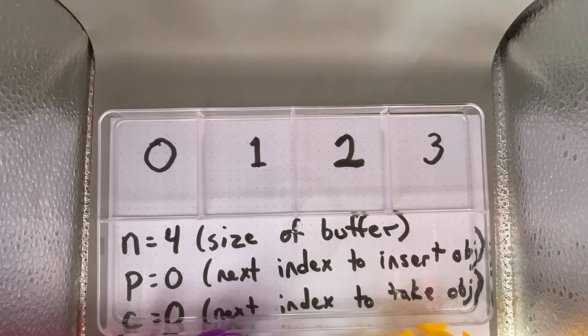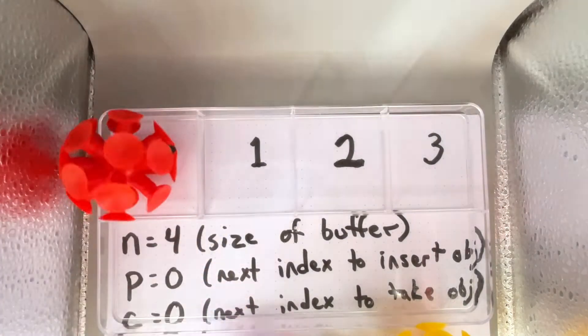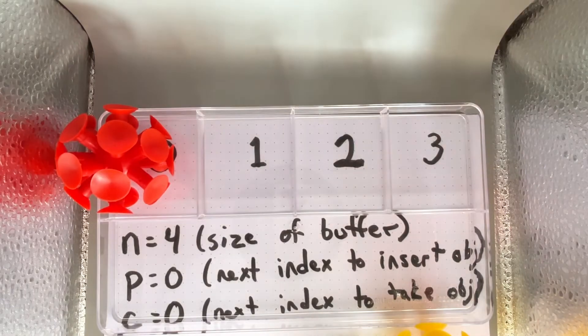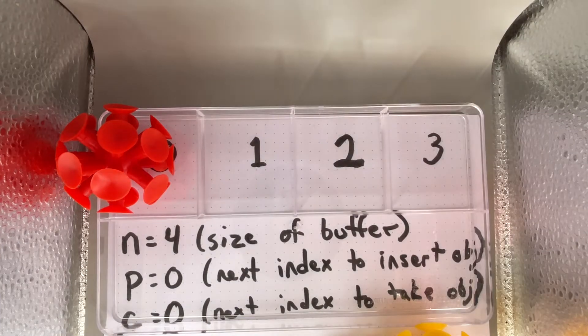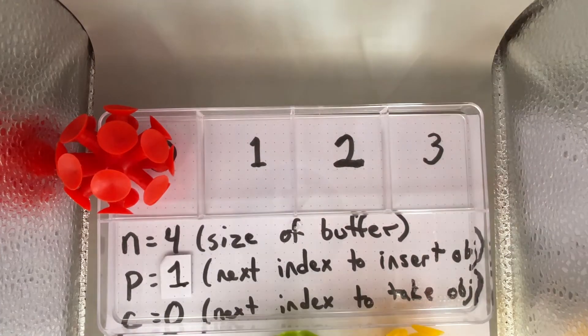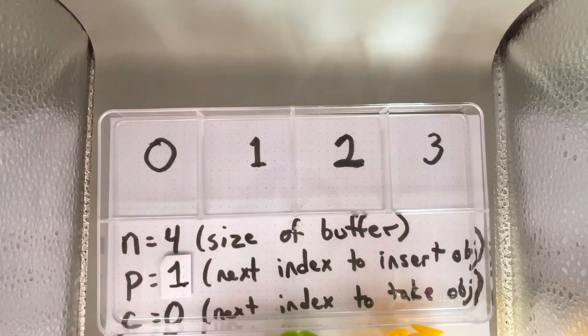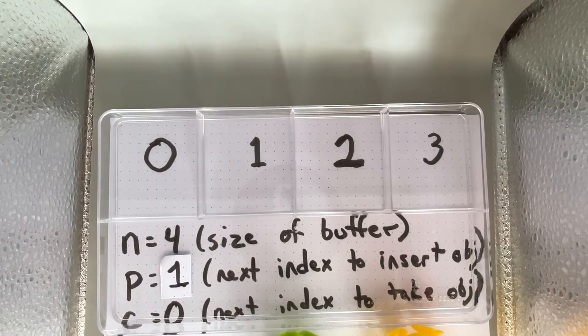In this problem, the producer is going to start putting in an object at 0. When it does that, the next object to put in updates so that it is now 1. Let's say the consumer comes along and takes that object. Now the consumer will also update so that it is now 1.